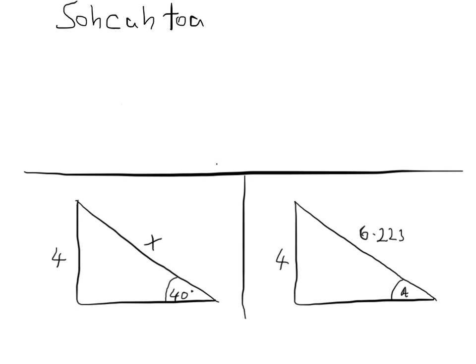Now let's look at the third type of problem. Let's assume the hypotenuse is 6.223 and this side is 4, just like before. You would expect angle A to be roughly 40 degrees. The question is: how do we find out what angle A is? Again, we use SOHCAHTOA. We label the two sides given — this is the opposite, and this is the hypotenuse — and A here is just a variable we need to find.